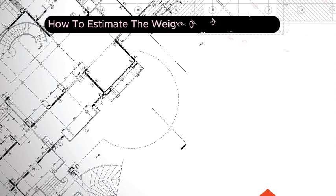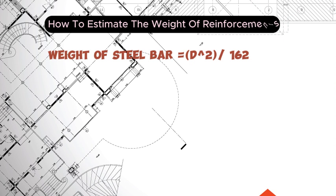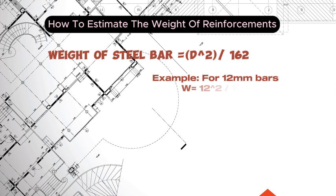To estimate the weight of a steel bar, the weight W is obtained using the relation: W = D² / 162, measured in kilograms per meter. For example, for 12 mm bars, the weight would be 12² / 162, which gives 0.889 kilograms per meter.